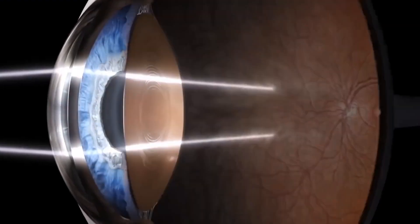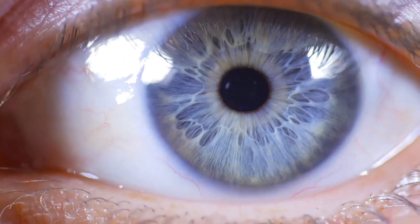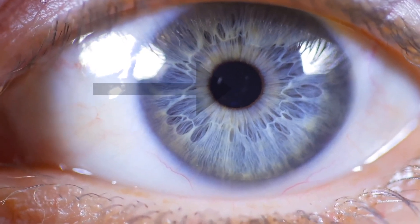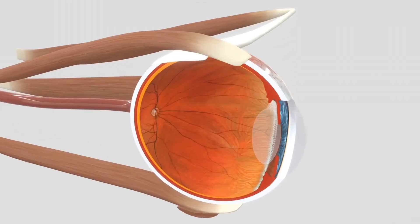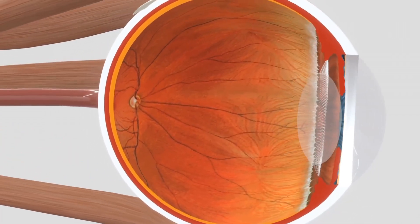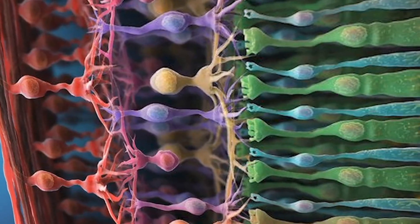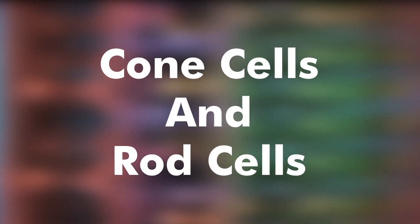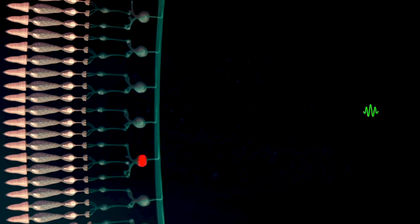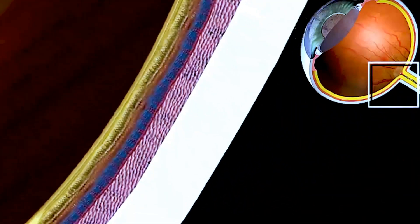The innermost layer of the eye is made up of nervous tissue, in which the retina is present. There is a very delicate structure present in the retina. There are some light-sensitive cells present in the retina which are called cone and rod cells. There are some pigments present in these rod and cone cells which convert the incoming light into nerve impulses, and then the nerve impulse is sent towards the brain.